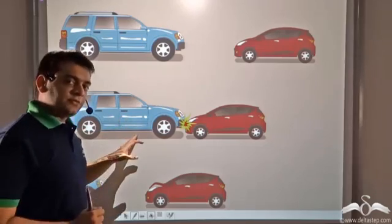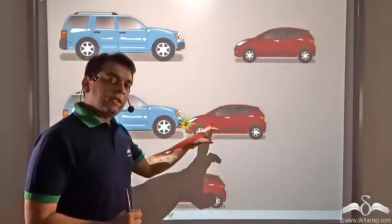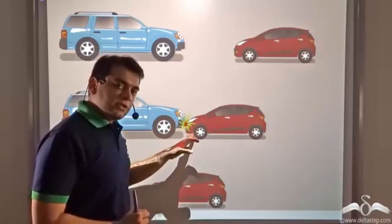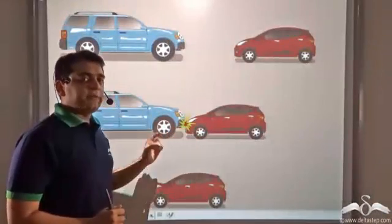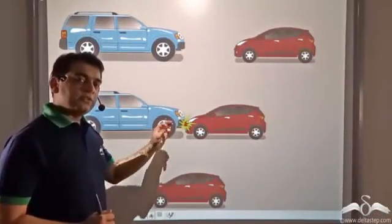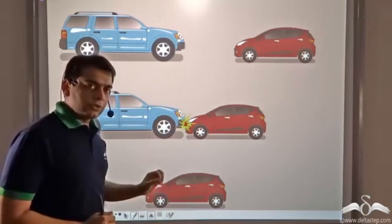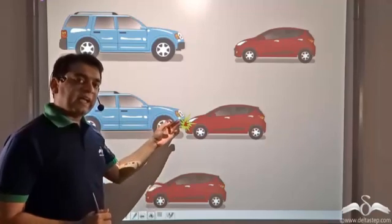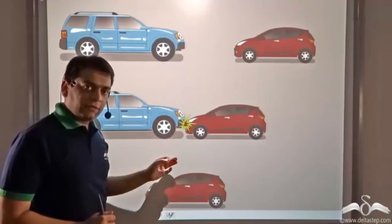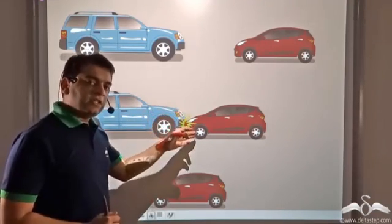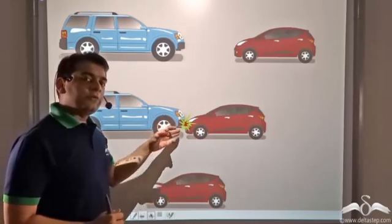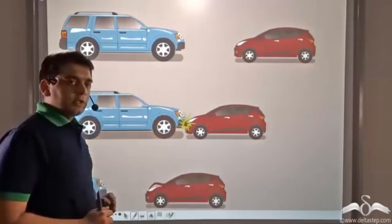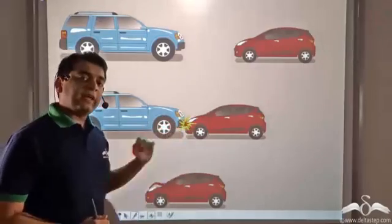Further, from Newton's first law, the speeding car would continue to move with the same velocity unless an unbalanced force acts upon it. Since there was a change in velocity of the speeding car, some force acted on it. Also, since the speeding car slowed down — that is, its acceleration was negative — the force acting on the speeding car was in the opposite direction of its motion. So what was this force acting on the speeding car?